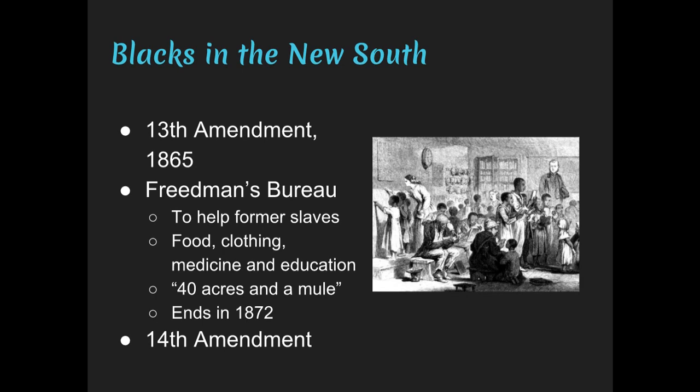President Johnson had tried to kill the Freedmen's Bureau repeatedly. He was a white supremacist, along with most white Southerners, and wanted to get rid of it. The 14th Amendment primarily granted citizenship to anyone born in the United States — a change to birthright citizenship — and also included equality under the law.